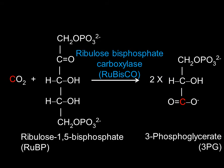The next reaction is the actual carbon fixation reaction. CO2 is added to ribulose-1,5-bisphosphate to generate two 3-phosphoglycerates. This is done by ribulose bisphosphate carboxylase, also known as RuBisCO. For convenience, we will be labeling the carbon from the CO2 in red.